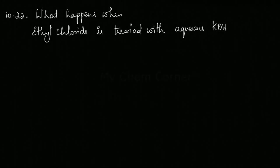Next is another conversion from question 10.22. What happens when ethyl chloride is treated with aqueous KOH? Ethyl chloride is CH3-CH2-Cl, the ethyl chain which has two carbon atoms and a chloride group.